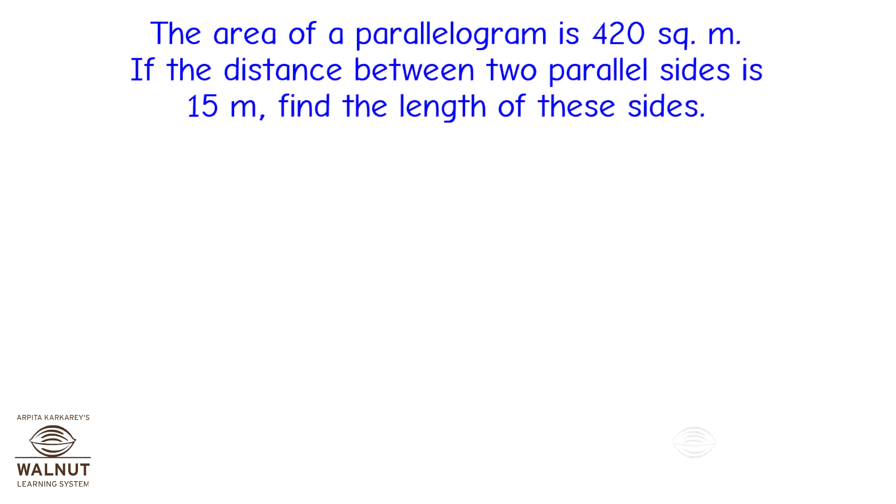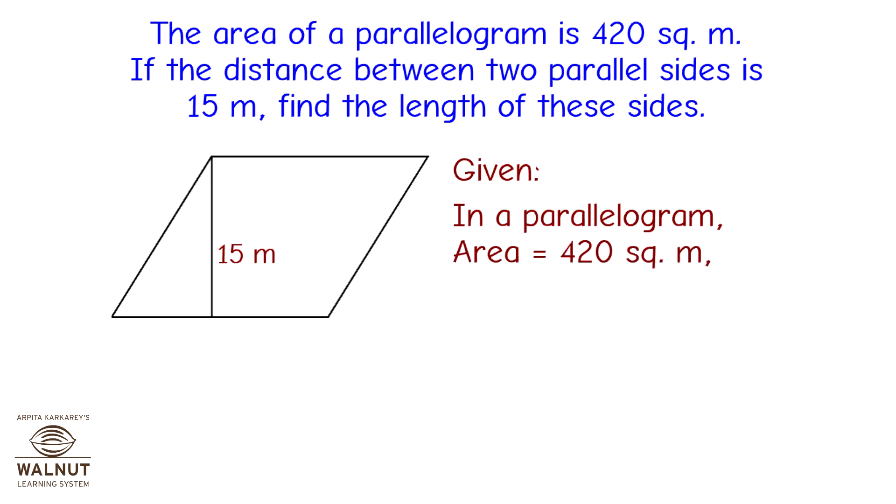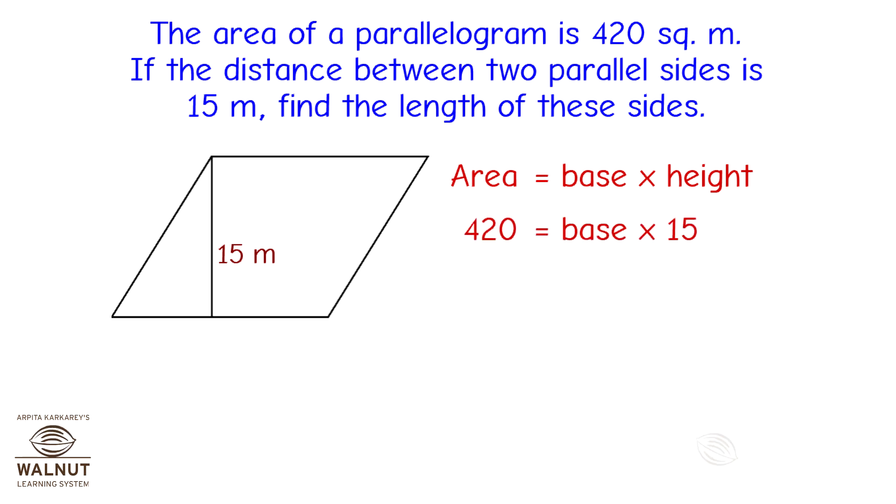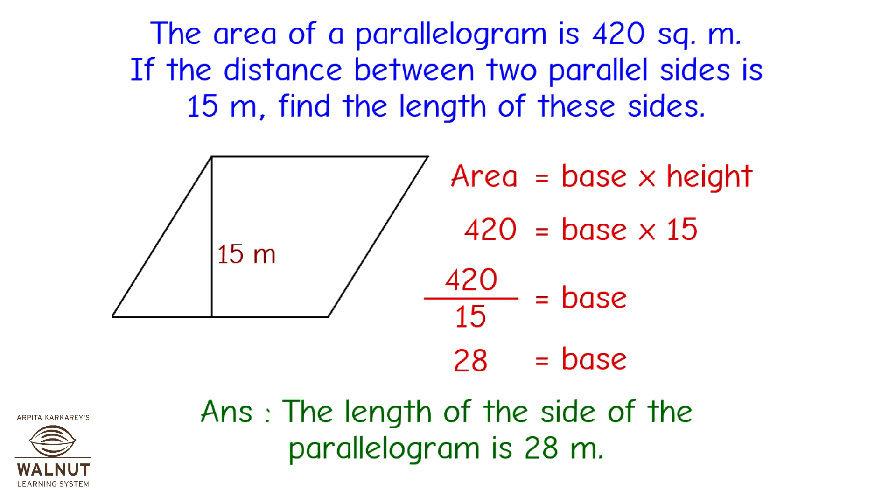The area of a parallelogram is 420 square meters. If the distance between two parallel sides is 15 meters, find the length of these sides. Read and think. Draw a parallelogram. The area of the parallelogram is given. The distance between the sides is 15 meters, so the height is 15 meters. We have to find the base. This one is easy. You have to just substitute in the formula. What is the formula to find the area of a parallelogram? Area is equal to base into height. Put in the values and we get 420 is equal to base into 15. That is 420 divided by 15 is equal to base. That gives us base is equal to 28 meters. So the answer is the length of the side of the parallelogram is 28 meters.